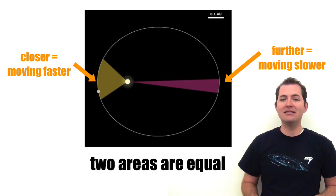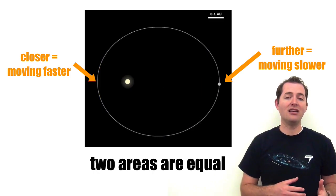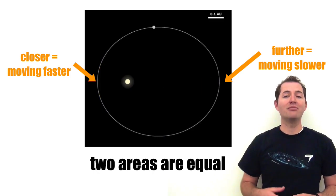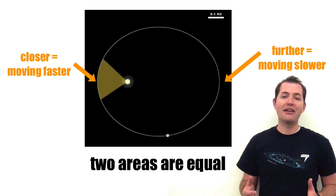Basically, what this means is that when planets are closer to the sun, they're moving faster and when planets are further from the sun, they are moving slower.